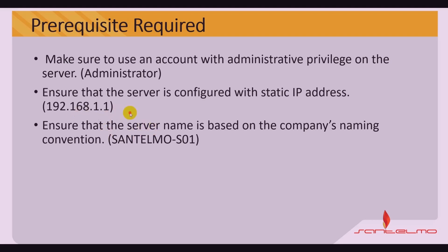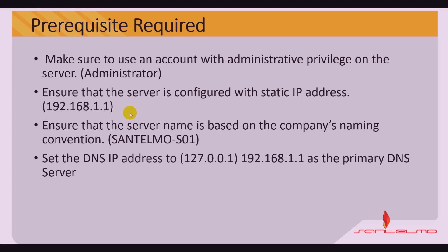Next, we need to set up the DNS IP address to 192.168.1.1 as the primary DNS on the server. This is the same IP address assigned to our server, because on the same server — Sanselmo S01 — we are going to configure both the ADDS, or Active Directory Domain Services, and the DNS, or Domain Name System.